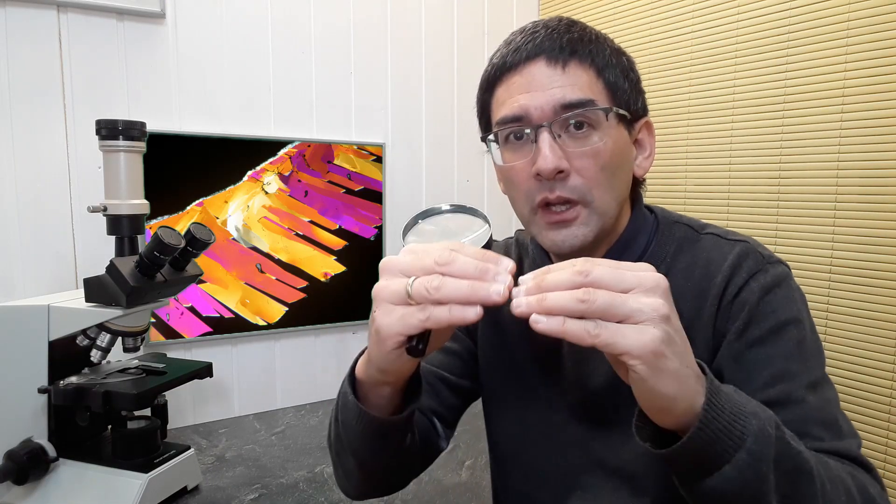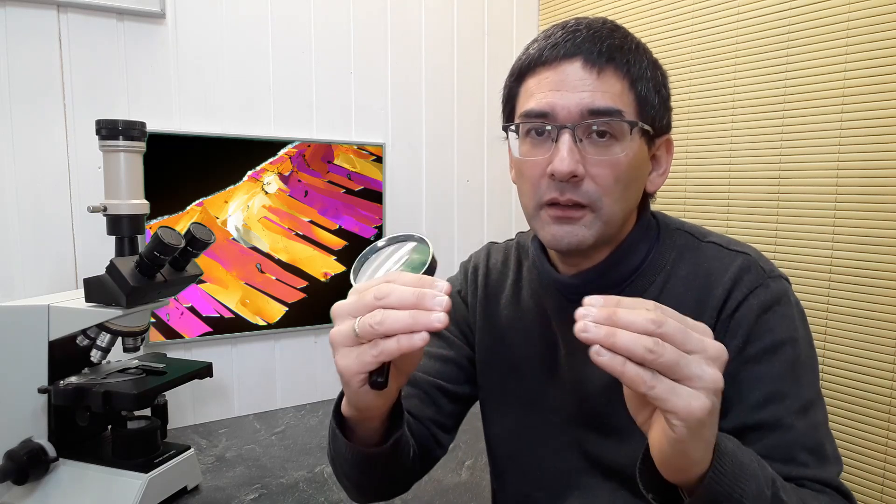Depending on how the light strikes the object, there might be either a yellow fringe at high contrast corners or a purple one. This not only reduces the resolution but also is not always very attractive if you're actually taking pictures using a microscope.